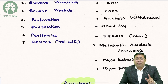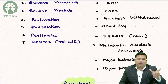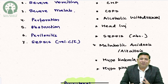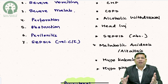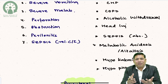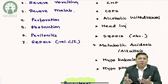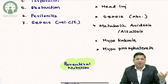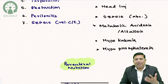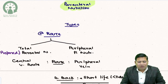Head injury is a contraindication because elevated CO2 in the brain increases vasogenic edema and intracranial pressure. In alcoholic withdrawal, there is already altered sensorium, and dextrose will consume all available thiamine, worsening the condition. Other contraindications include metabolic acidosis, metabolic alkalosis, and electrolyte imbalances — especially hypokalemia and hypophosphatemia.